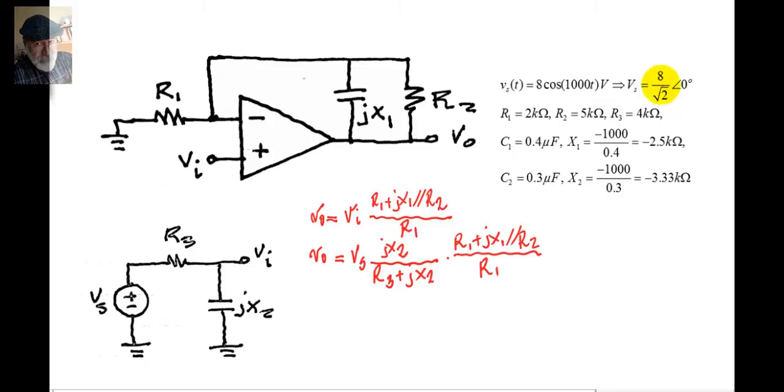The RMS value is 8 over root 2, because we are using IEEE phasors, which are RMS phasors, 0 degrees. The values of the impedances are given for the resistors and the capacitors.